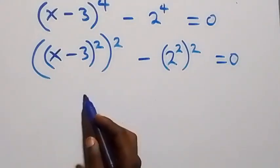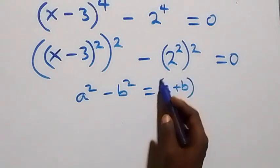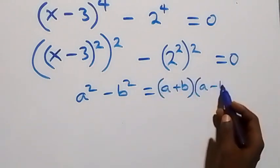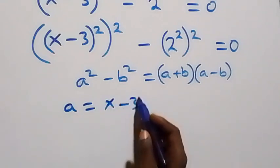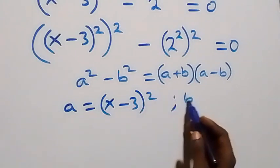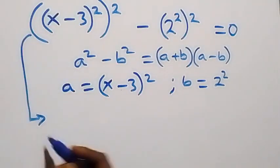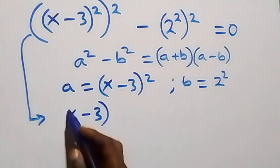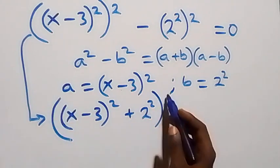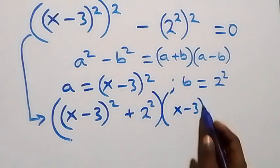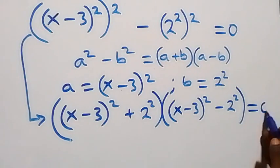This follows from the difference of two squares identity: a squared minus b squared equals (a plus b) times (a minus b). Here, a stands for (x minus 3) squared and b stands for 2 squared. So this becomes [(x minus 3)^2 plus 2^2] times [(x minus 3)^2 minus 2^2] equals 0.